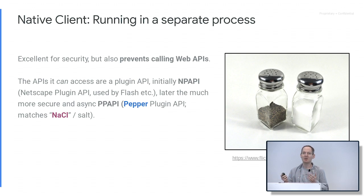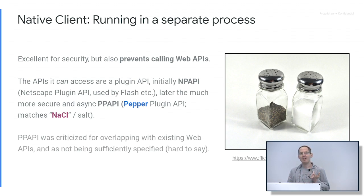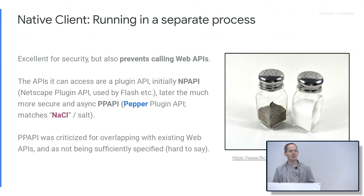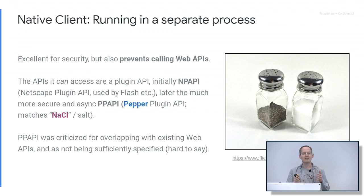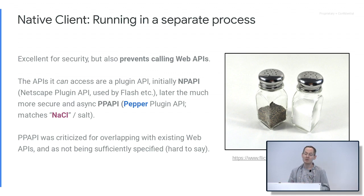This worked; however, a criticism was that it overlaps with existing web APIs. The web already had APIs for rendering, audio, and networking, and this was basically a bunch of new APIs that do similar things. Another criticism was that the APIs weren't fully specified — there was an implementation of Pepper in Chrome with docs, but other browsers were worried whether the docs were spec'd enough, whether there were corner cases, whether if they tried to implement it they'd run into issues.